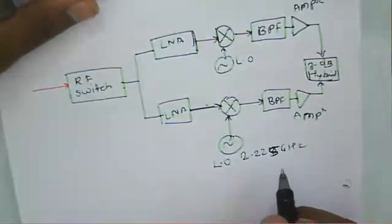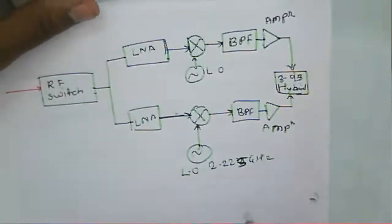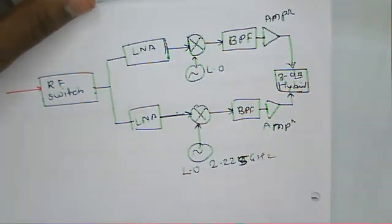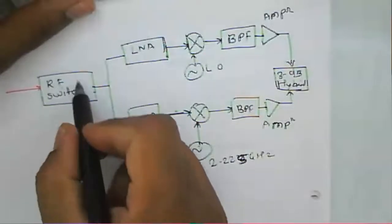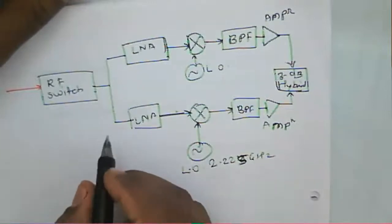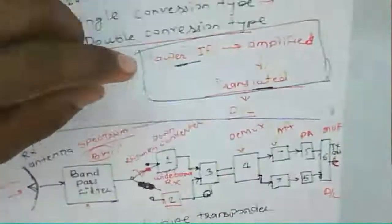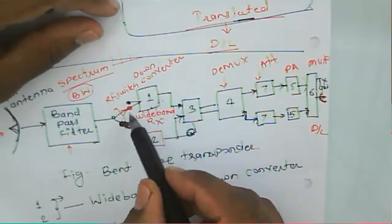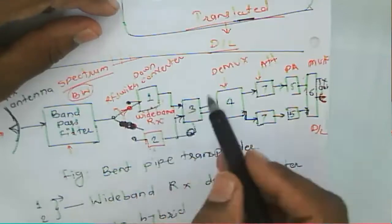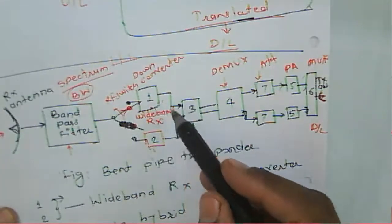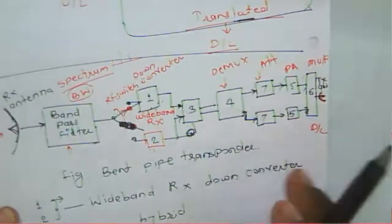A local oscillator at 2.225 GHz is provided to the mixer to convert the signal. The same local oscillator frequency is used for both receivers. The wideband receiver selects through the RF switch — switching between 1 and 2 — and produces the corresponding output.